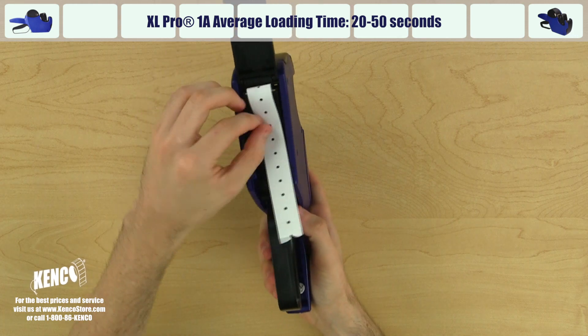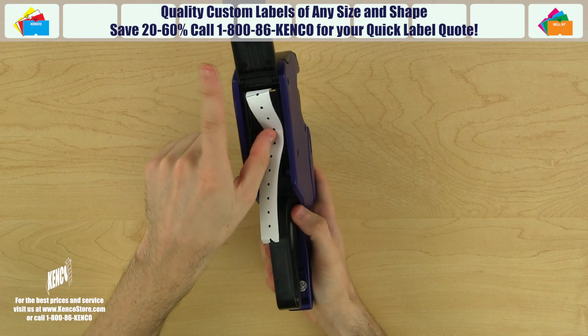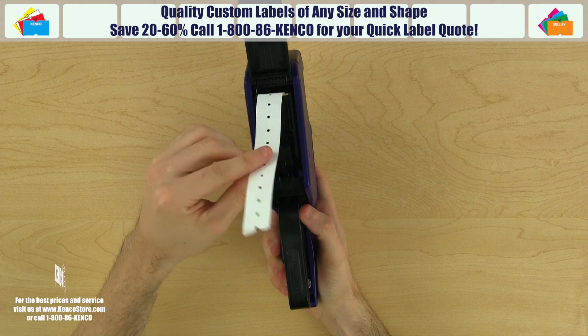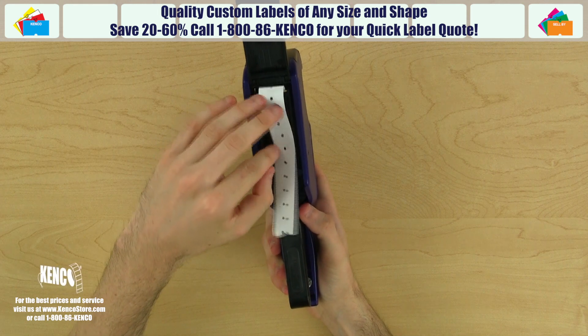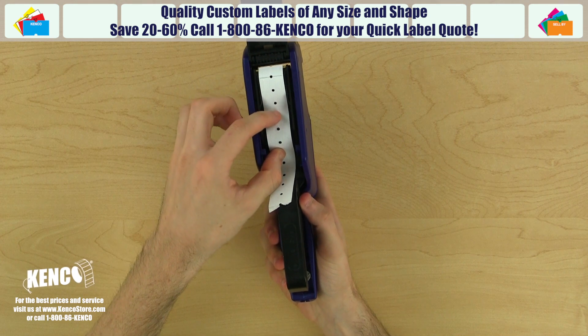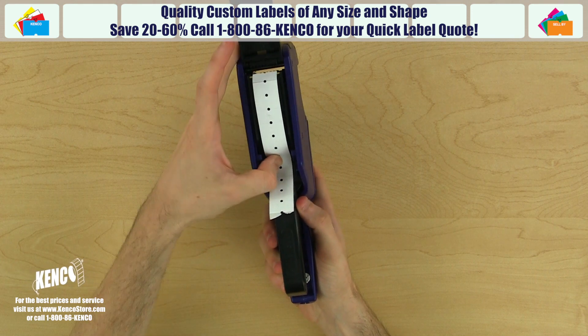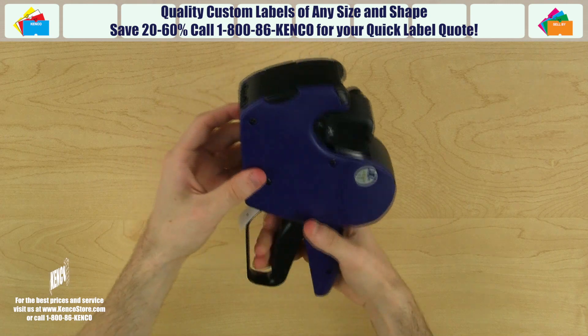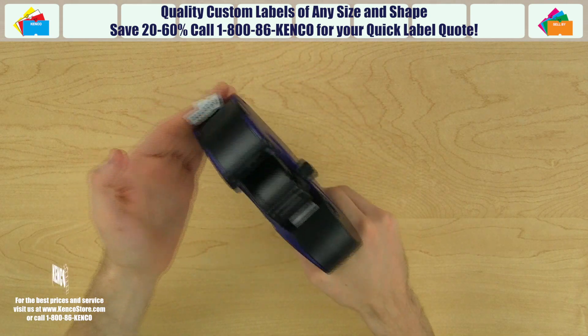You'll want to be careful not to feed the labels around the pressure roller, as this would cause the labels to jam. With the labels coming out through the front, let's push the pressure plate back in. Fold the labels down toward the trigger and close the bottom cover tightly until it locks into place. After two or three squeezes of the trigger, your gun is ready to label.